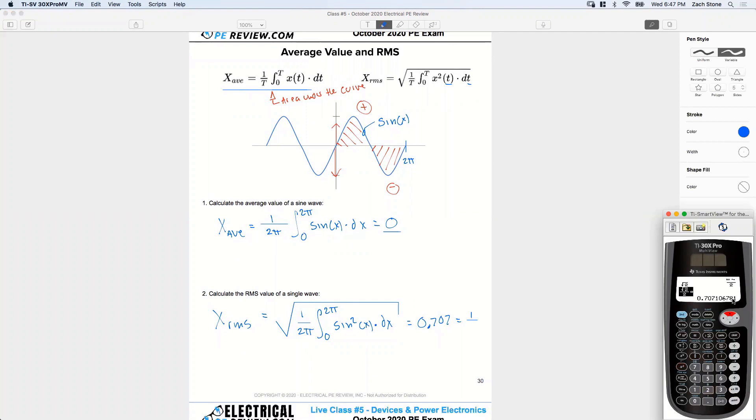6, 7, 8, 1 at the very end. If I scroll up, I should have the exact same, look. 6, 7, 8, 1. These are the exact same numbers all the way to the long decimals. So 0.707 is really 1 over square root of 2. See that?